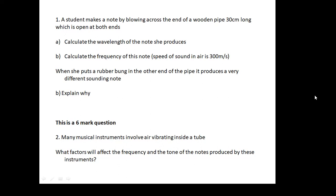Here are a couple of questions to have a go at. First: a student makes a note by blowing across the end of a wooden pipe 30 centimetres long, which is open at both ends — very similar to the example done earlier. The second is a six-mark question: many musical instruments involve air vibrating inside a tube — what factors will affect the frequency and tone of the notes produced? Get this learned and be ready for questions like this.